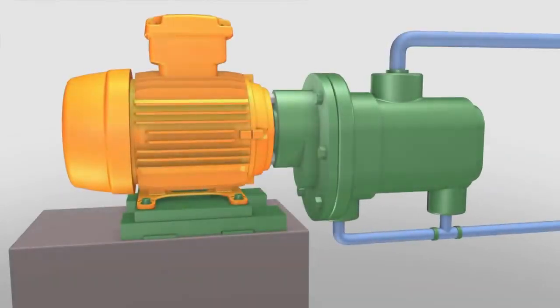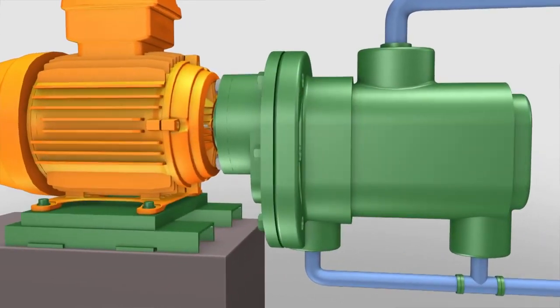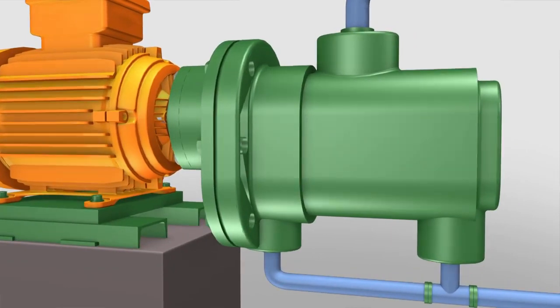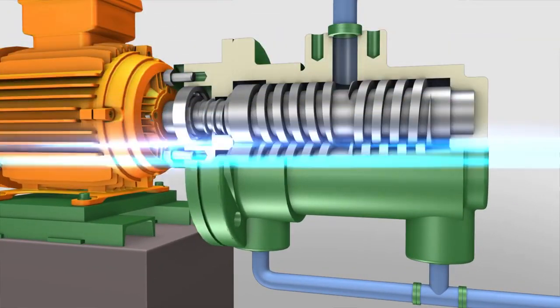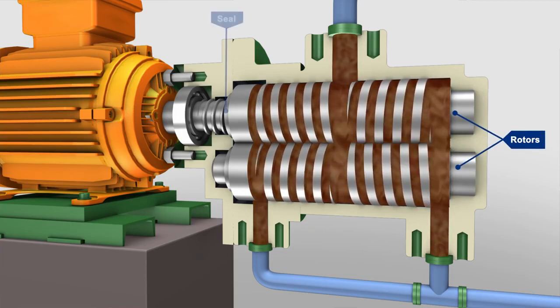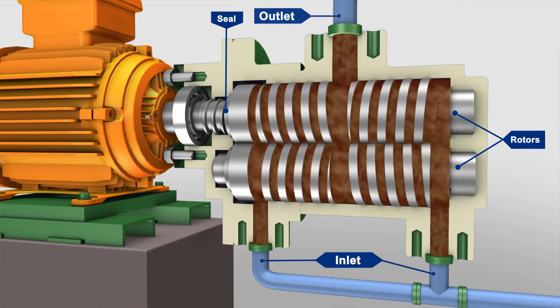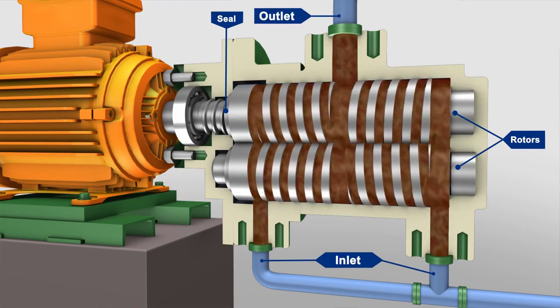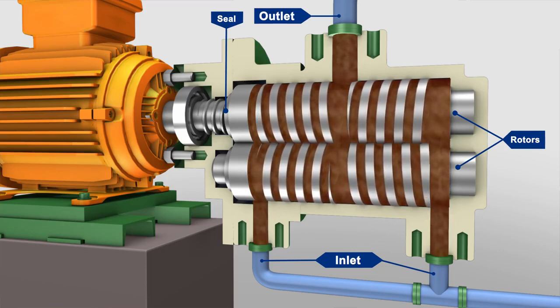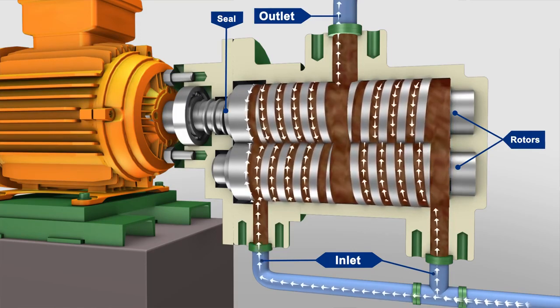In screw pumps, it is the intermeshing of the threads on the rotors and the close fit of the surrounding housing that creates one or more sets of moving seals in a series between the pump inlet and outlet. These sets of seals or locks, as they are sometimes referred to, act as a labyrinth and provide the screw pump with its positive pressure capability.